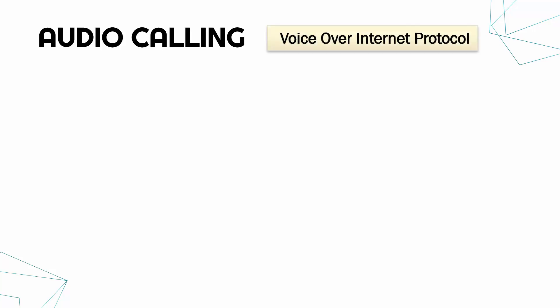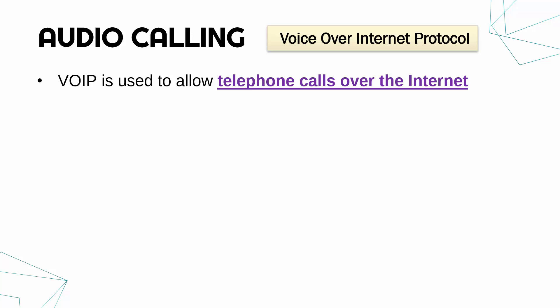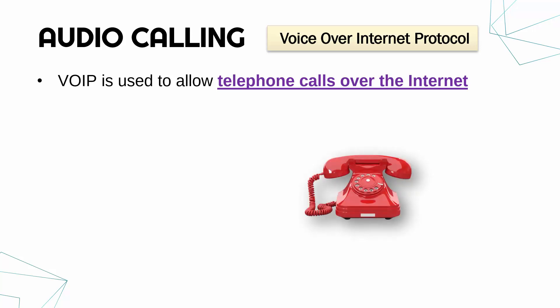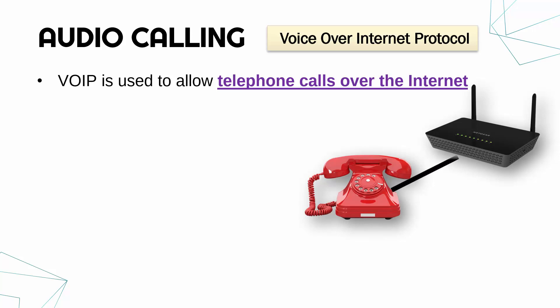A more modern version of a phone call is Voice over Internet Protocol, often shortened to VoIP. VoIP is a method or protocol allowing you to make telephone calls over the internet, so instead of your phone connecting to a satellite, radio tower, or telephone line, you're going via the internet.